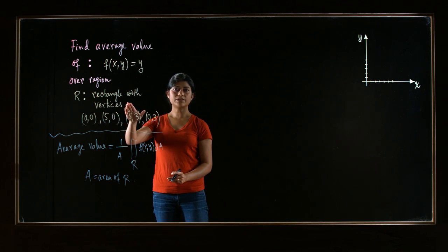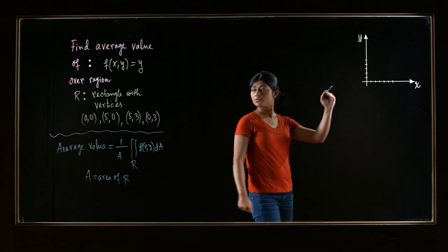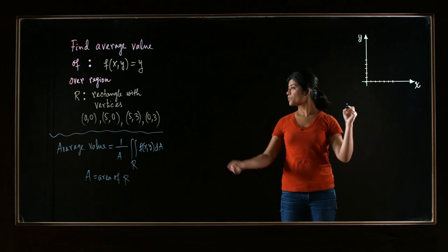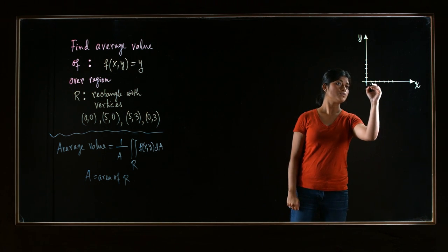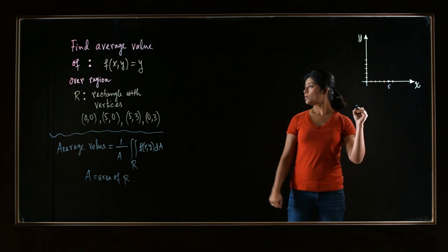Now R is nothing but a rectangle with these four vertices. So let's try to graph that. The vertices are 0, 0, so it's the origin. Then 5, 0, so 1, 2, 3, 4, 5, 0.